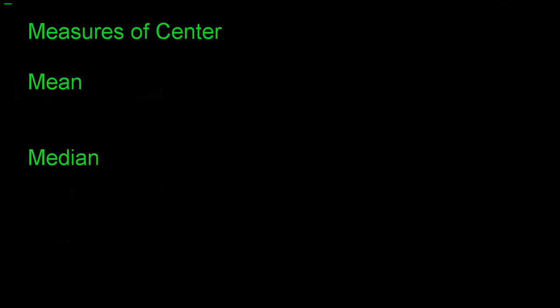One way to describe data is measuring its center. There are two ways to measure the center of data: the mean and the median. The symbol for mean — there are actually two. X-bar is the mean of a sample of n values, whereas mu is the mean of a population — the mean of an entire population, which is typically pretty hard to find.